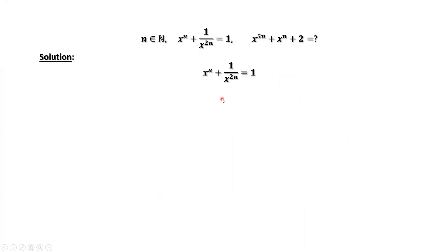This is the given condition. What do we want to find? We want to find this part. We don't have a denominator here. The first thing we need to do is get rid of the denominator from the left-hand side. How? Multiply both sides by x^(2n).